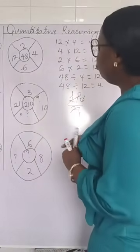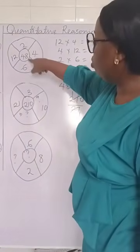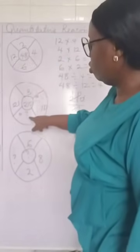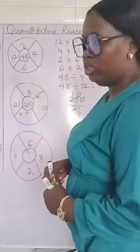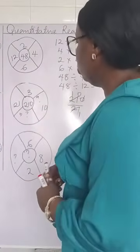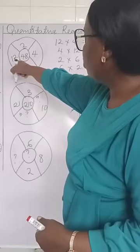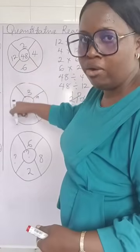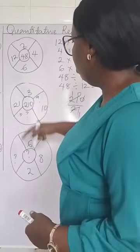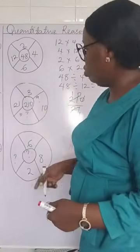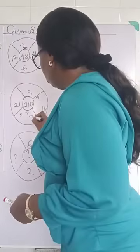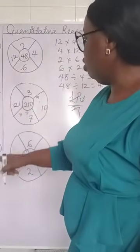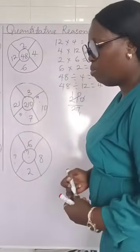Now for B: in our rule, 2 times 6 gives us 12, or 6 times 2 gives us 12. Similarly, 3 multiplied by B gives us 21. Just as 12 divided by 2 gives us 6, we have 21 divided by 3, or we ask: 3 multiplied by what gives us 21? The answer is 7. So 7 times 3 is 21, or 3 times 7 gives us 21. B equals 7.